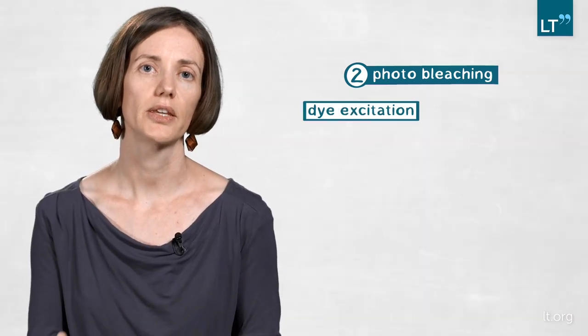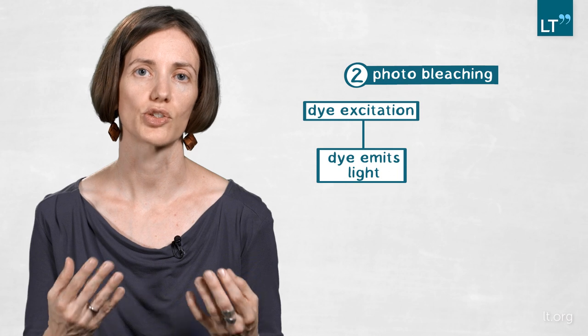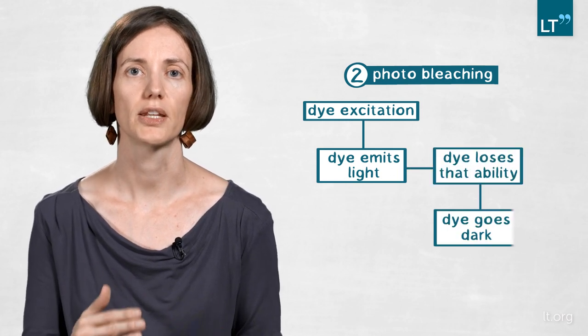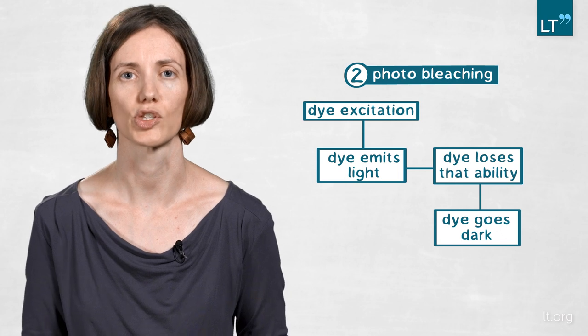The second thing we looked at was photobleaching. Of course fluorescence dyes have a photobleaching effect. This is just physics. At that point you excite the dye, the dye is giving the light back, and at a certain time it's losing that ability and then it's just going dark at that certain spot.